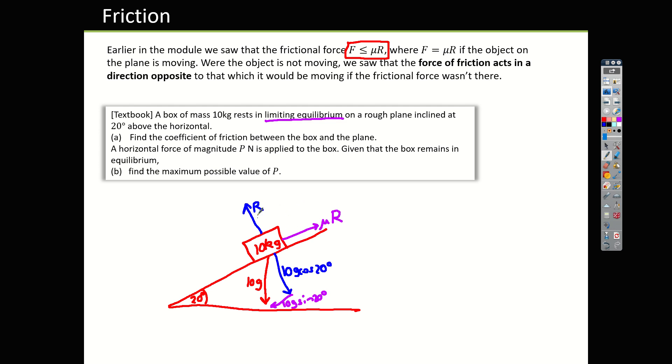So now we're ready to resolve, because all the forces are there. Starting with the blue direction, perpendicular to the slope. We can see that we're in equilibrium. So the two blue forces are equal. R = 10g cos 20. So we know our value of R, and I can then get the coefficient of friction by subbing that into the purple equation. So if I resolve this way, then μR is 10g sin 20. μ, therefore, is 10g sin 20 divided by R, which we've seen is 10g cos 20.